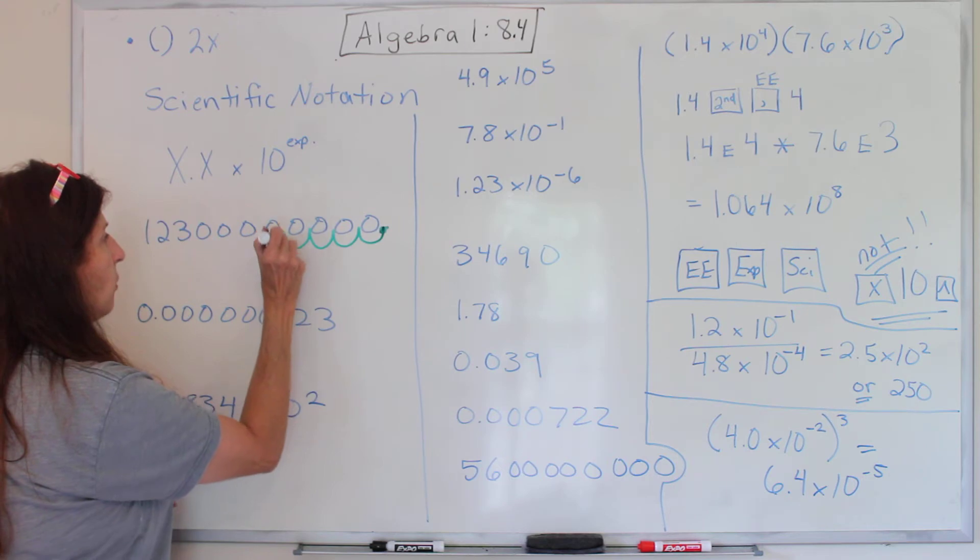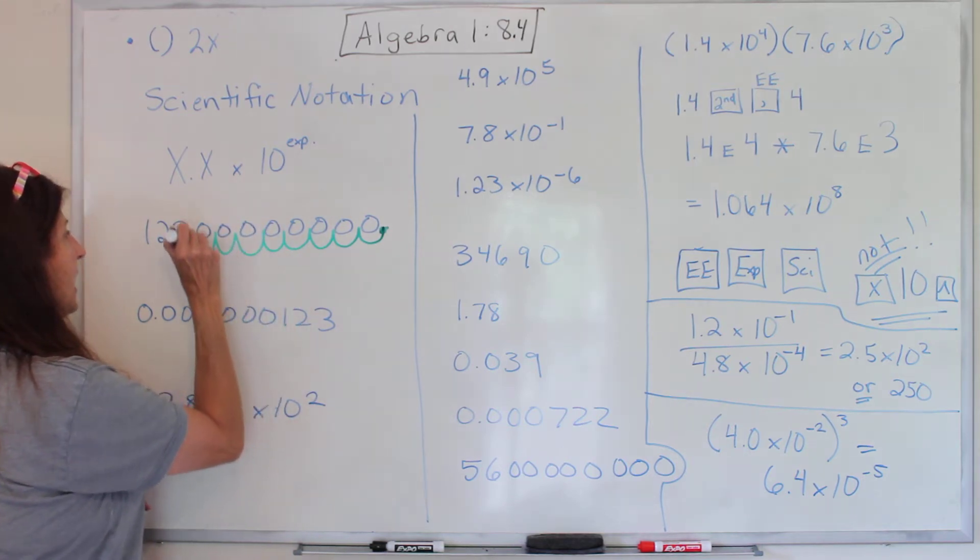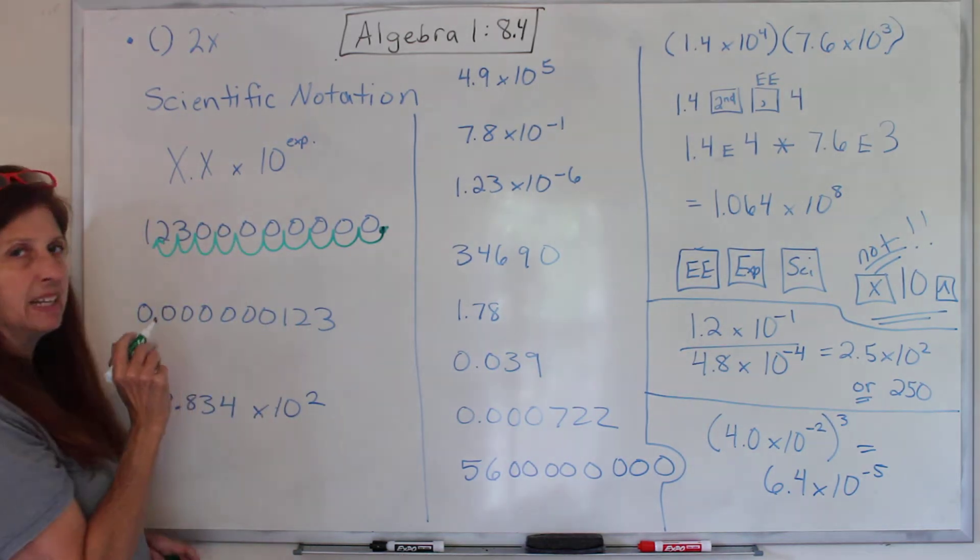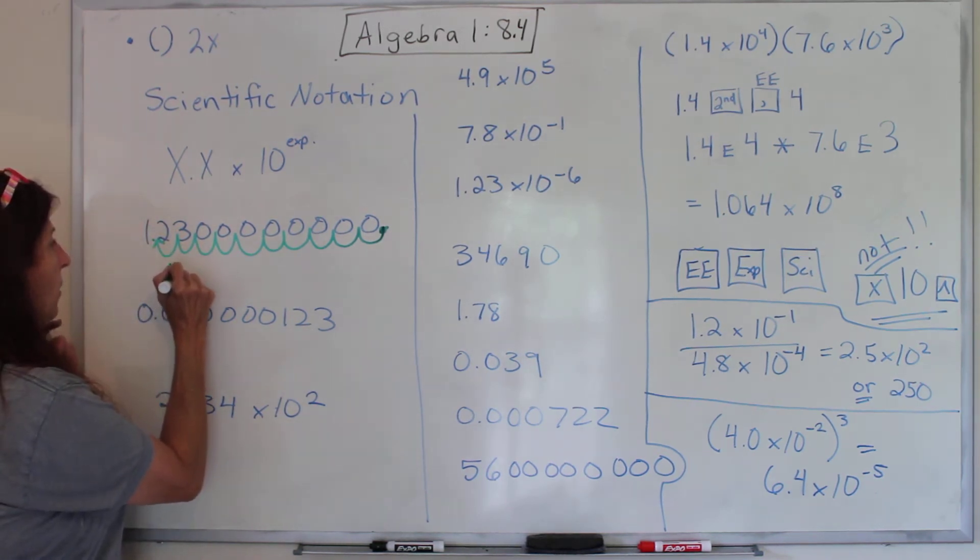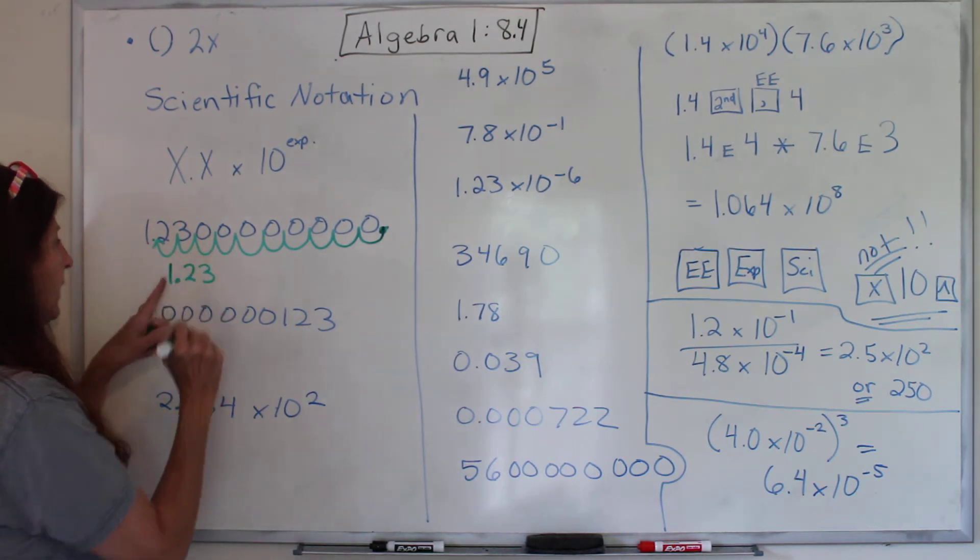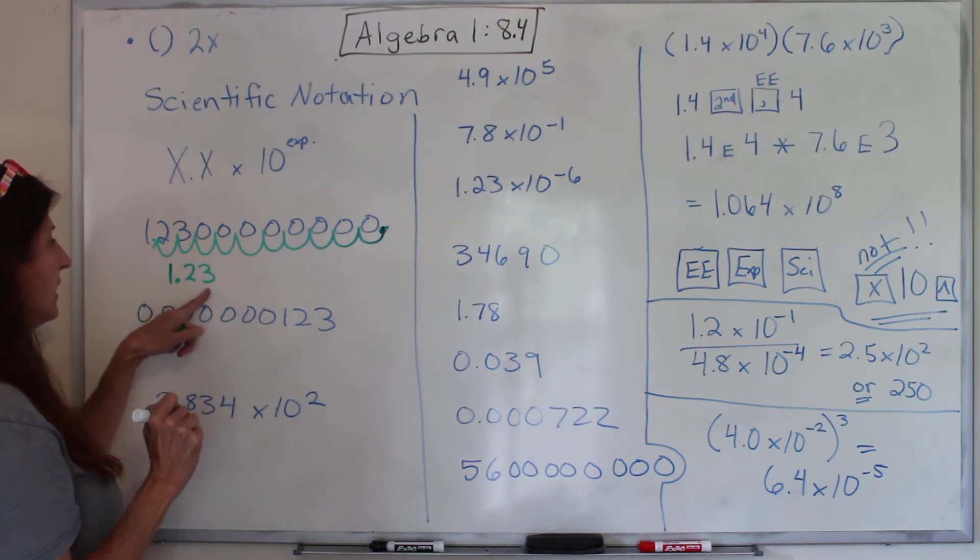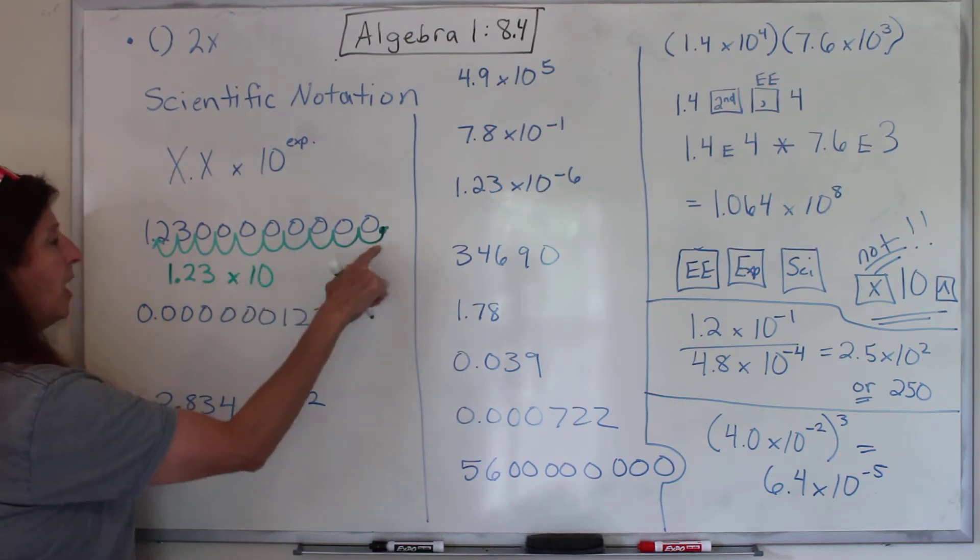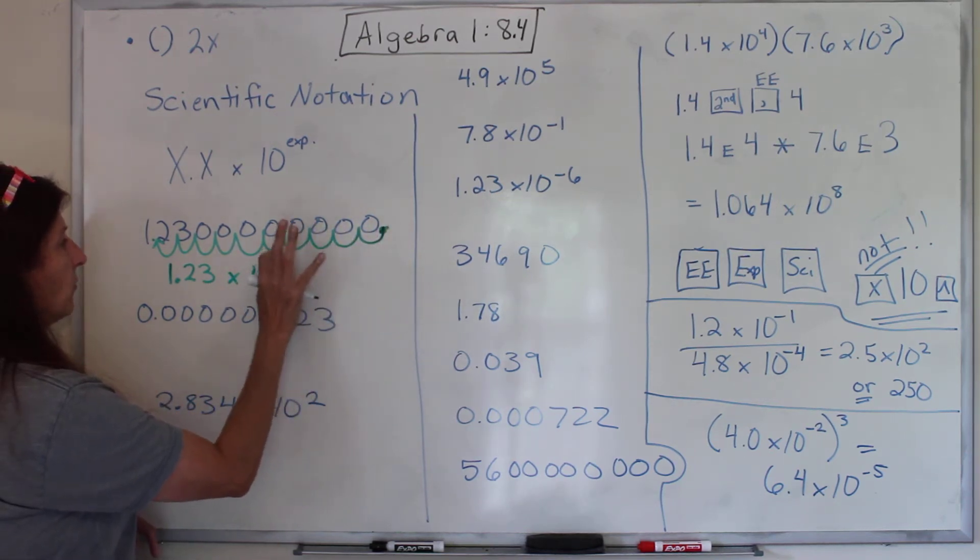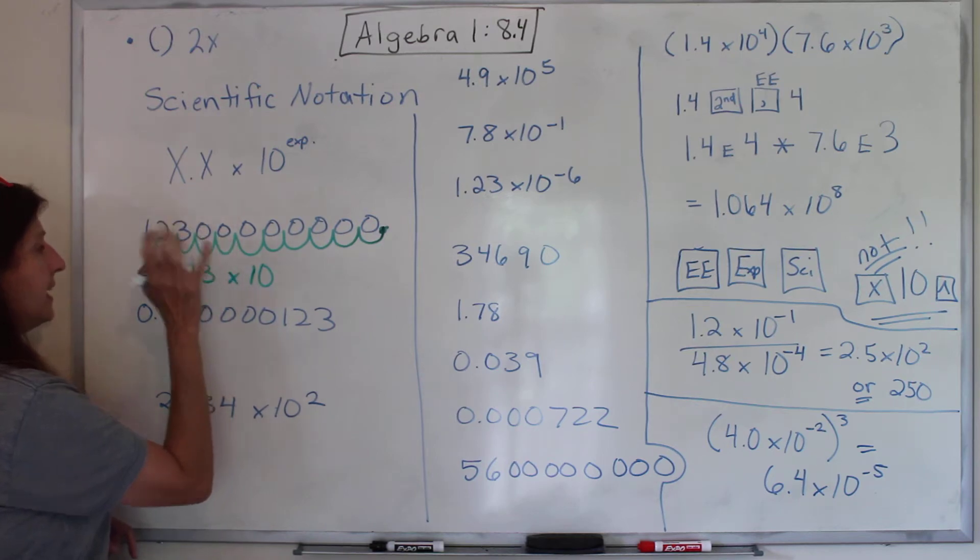1, 2, 3, 4, 5, 6, 7, 8, 9, 10. Ribbit. He said ribbit. So now he's right there.